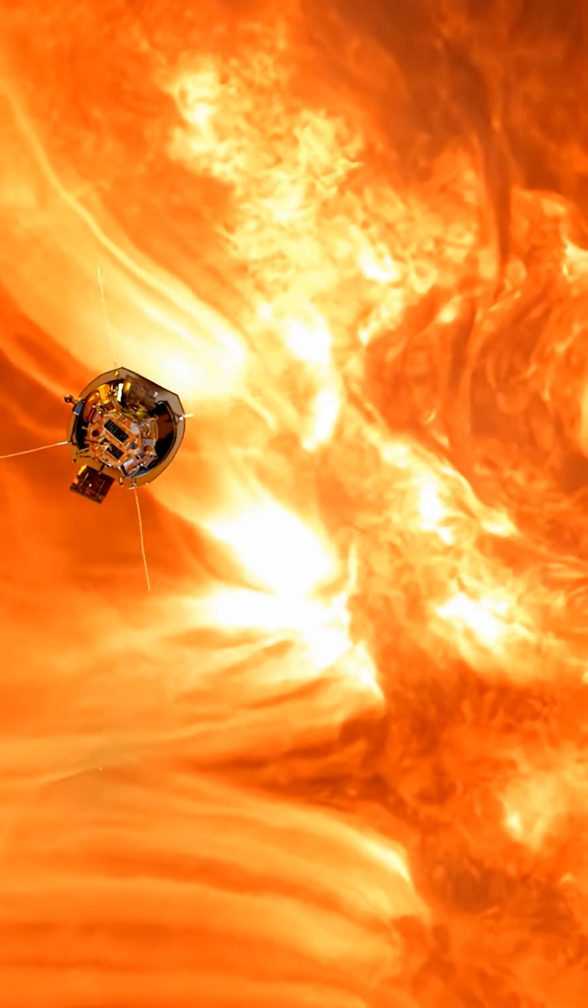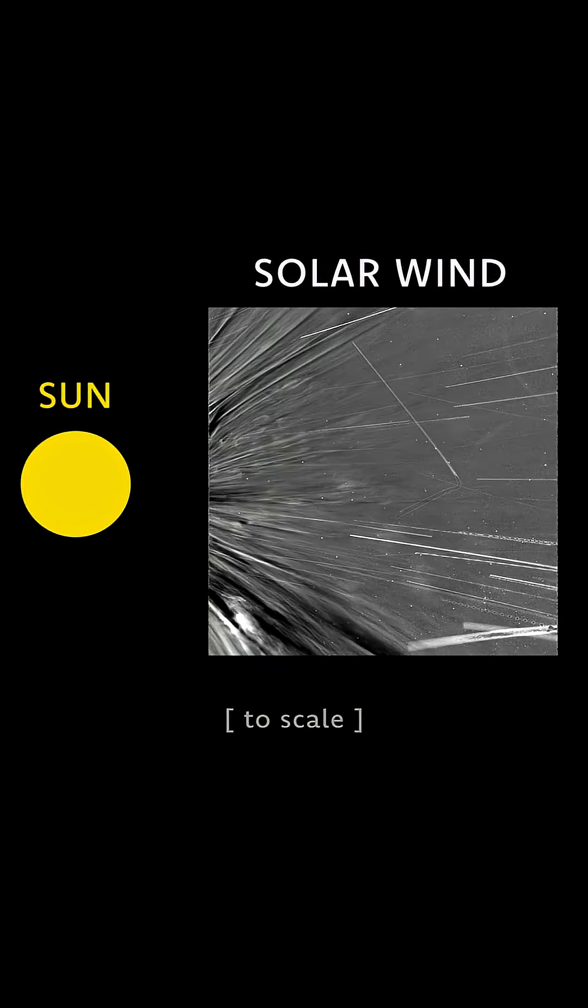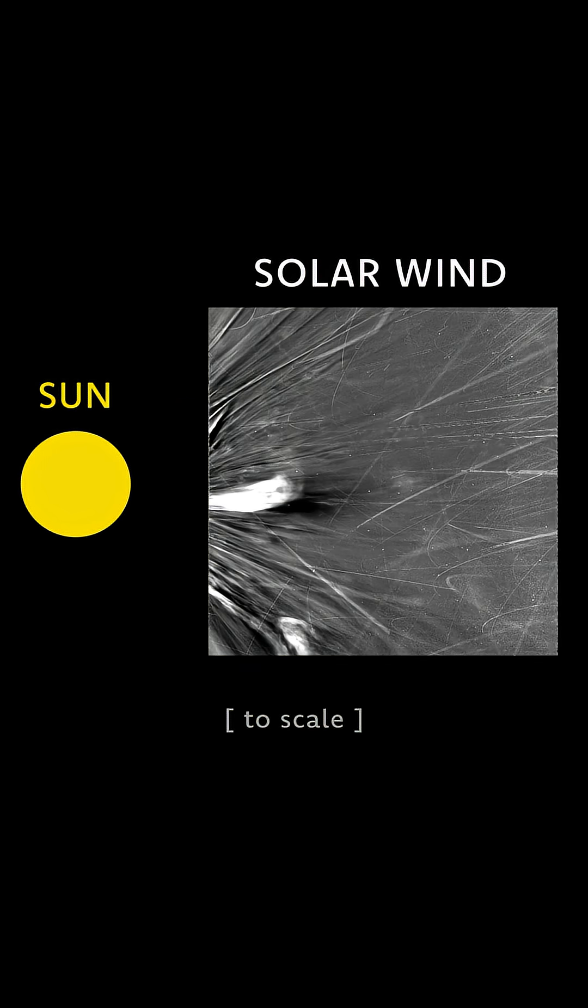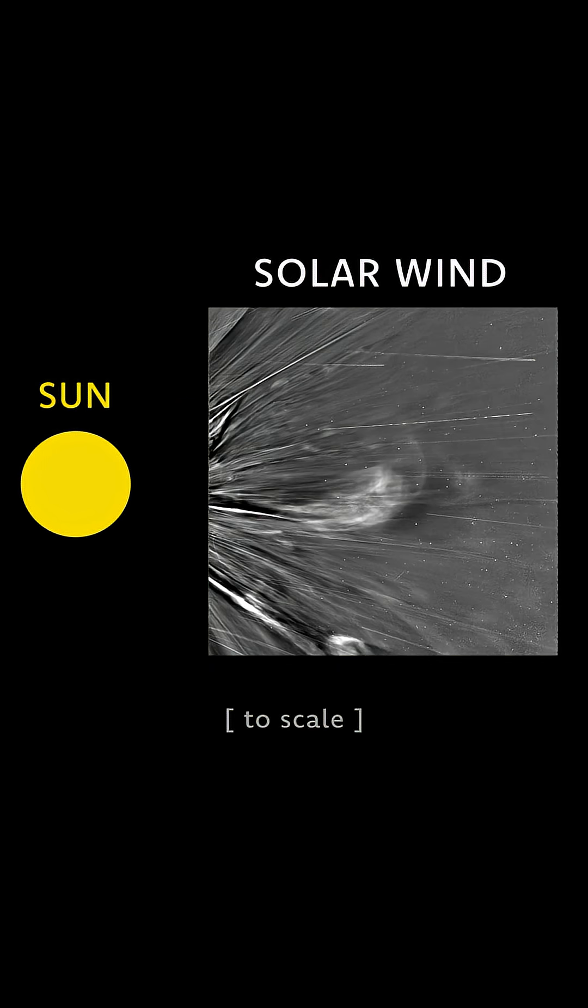As Parker Solar Probe approached the sun in December 2024, it took this video of the solar wind, particles and magnetic fields that flow out of the sun.